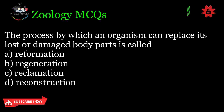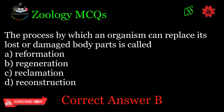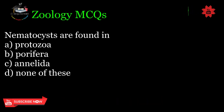The process by which an organism can replace its lost or damaged body parts is called: A. Reformation, B. Regeneration, C. Reclamation, D. Reconstruction. Correct answer: B.